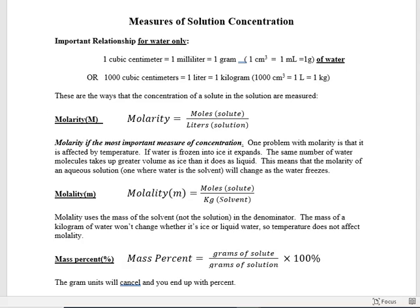Molarity is the most important measure of concentration. In AP chemistry or college chemistry, you'll use molarity constantly — it's the most common of all the measures we'll cover. However, one problem with molarity is that it is affected by temperature. When water freezes into ice it expands, so the same number of water molecules takes up a greater volume. This means the molarity of an aqueous solution will change as water freezes — the molarity goes down because the denominator, liters of solution, increases.